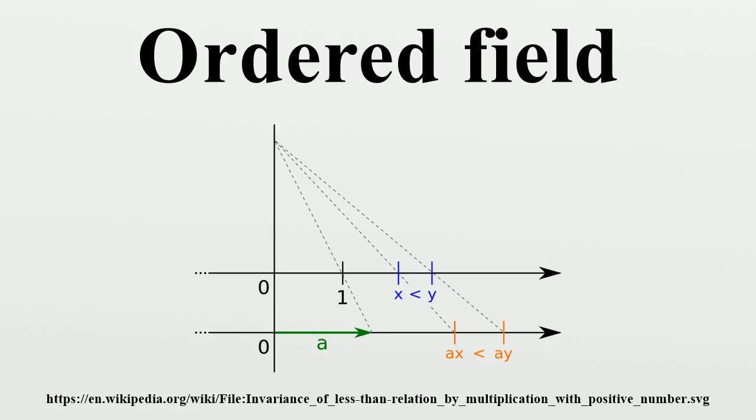Every ordered field is a formally real field. Definitions: There are two equivalent common definitions of an ordered field. The definition of total order appeared first historically and is a first-order axiomatization of the ordering as a binary predicate.